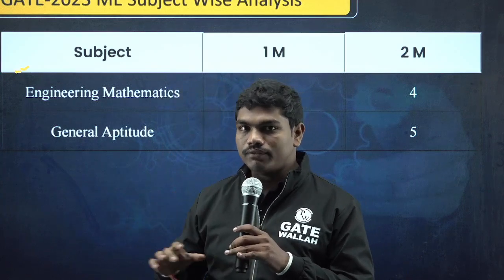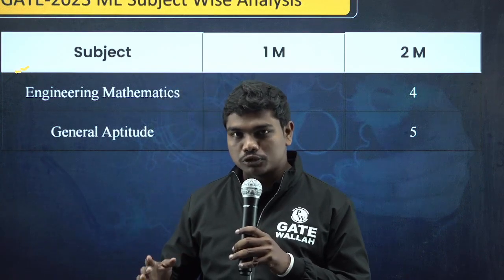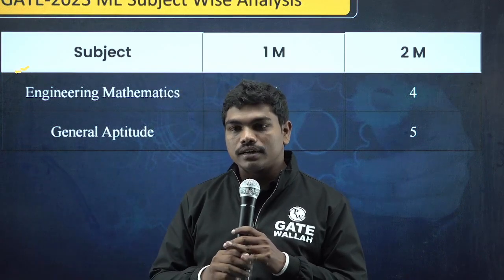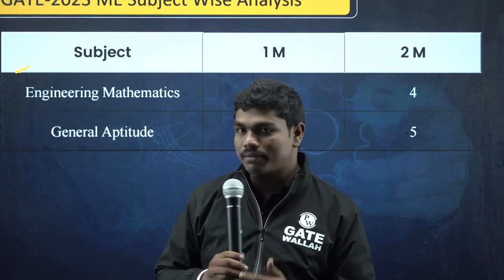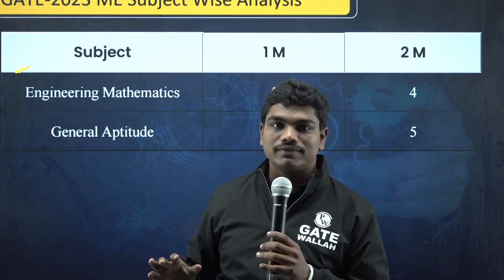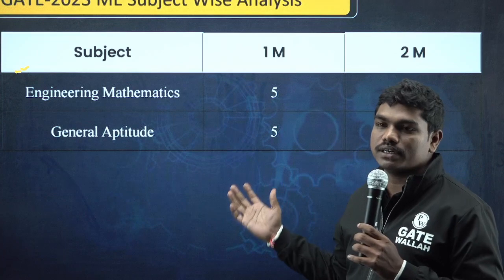In view of all our sections' cutoffs, the cutoff could be somewhere around 32 to 34 marks. The number of students who qualify can also be quite high because majority of the questions were easy this time. That's basically from the maths and aptitude. Thank you.